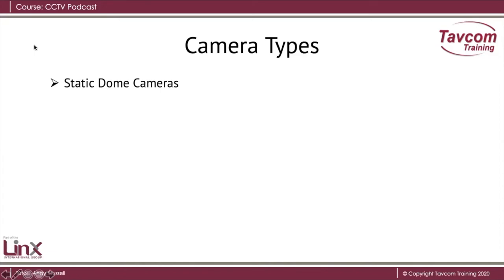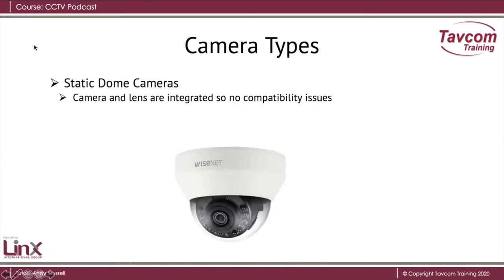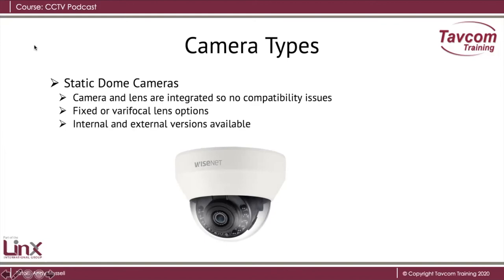Static dome cameras. Much like a bullet camera, a static dome camera has the camera and lens integrated, so again there's no compatibility issues. Similarly, we can have fixed or vary focal lens options, and there are also internal and external versions available. IR light can also be integrated. This particular image is of an internal camera, but they are available in external formats.